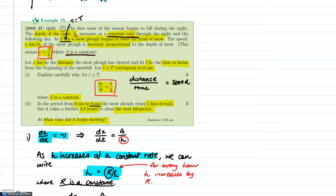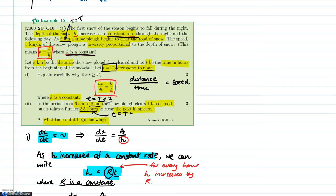8am — what time does that refer to? From the previous part, we let t equal to big T, which meant that was 6am. So if it's 8am, that's going to be t equal to big T plus 2 hours. The second part: we've got 3.5 hours — that's an additional 3.5 hours after 8am, so it's going to be 11:30. We write that as big T plus 5.5. So we've got those two times to consider.